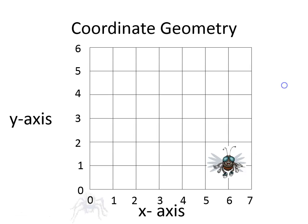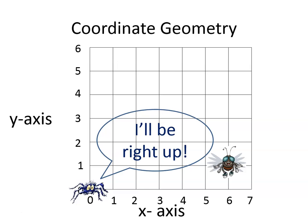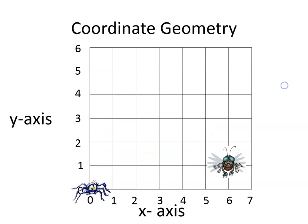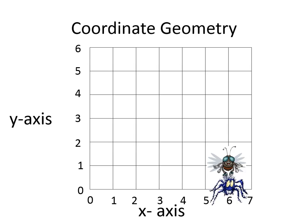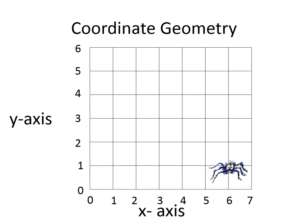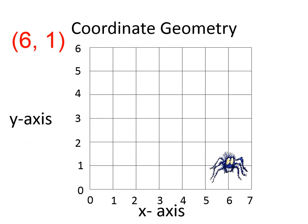Here comes the spider, and the spider always says 'I'll be right up.' So for the spider to get to the fly, first he's going to the right — six to the right and one up — so he is now at point six comma one.